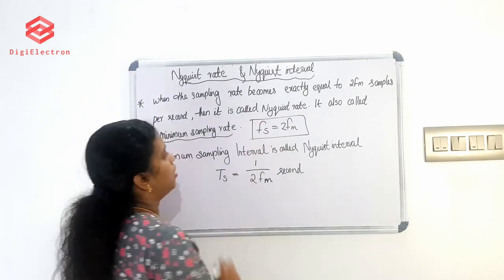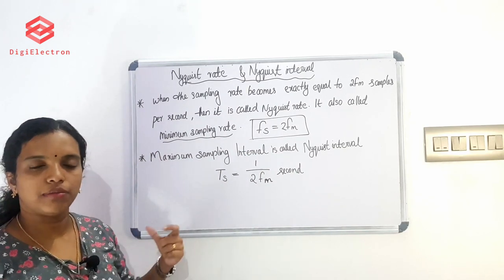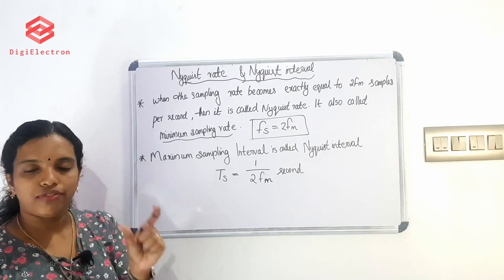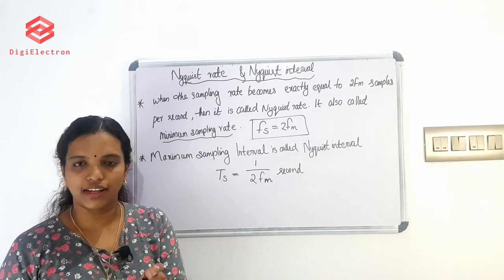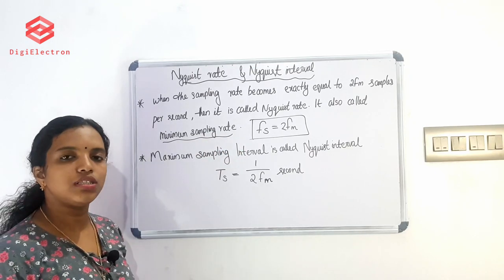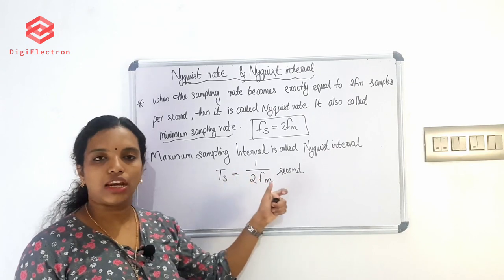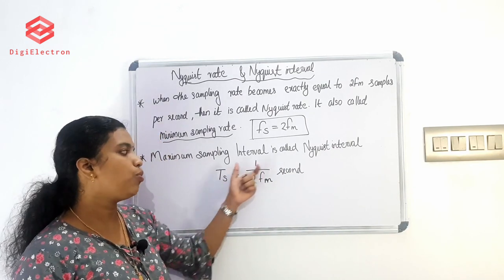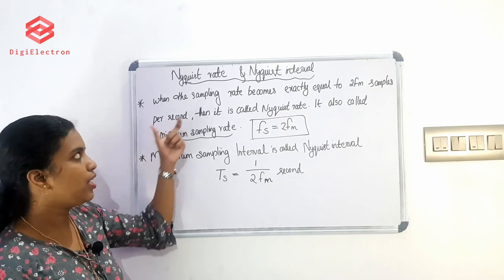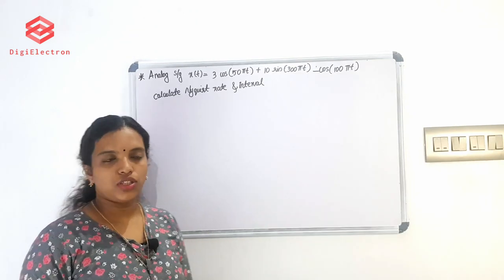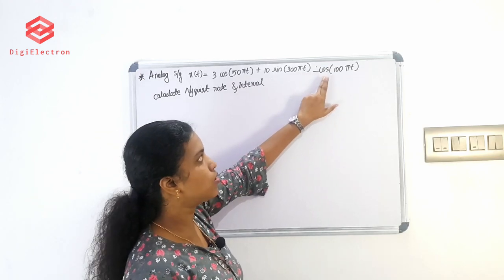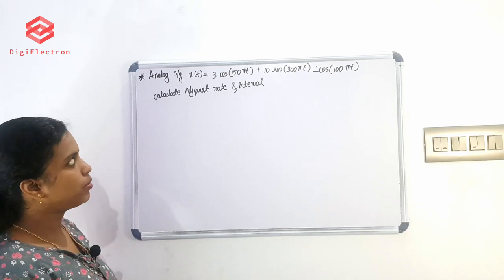So Fs = 2Fm is the Nyquist rate condition. What is the Nyquist interval? The maximum sampling interval is called the Nyquist interval. The Nyquist rate is the minimum sampling rate of 2Fm, and correspondingly the Nyquist interval is the maximum allowable sampling period.